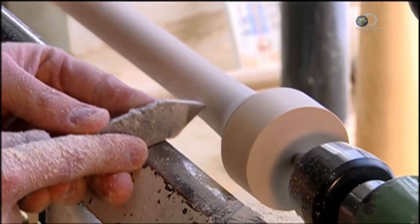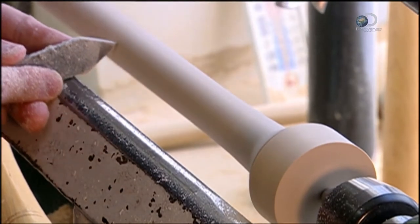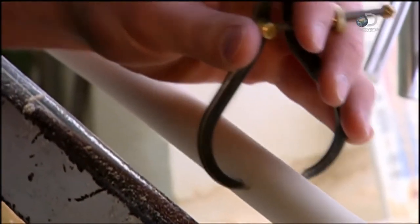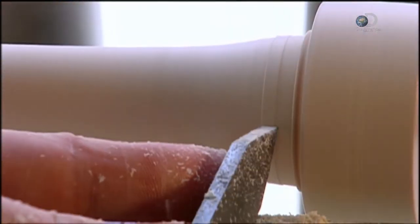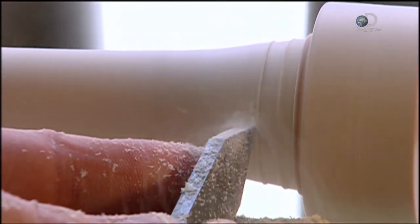Using the skew chisel, the slope of the bat is shaped. The handle of the bat is slimmed down a little more.